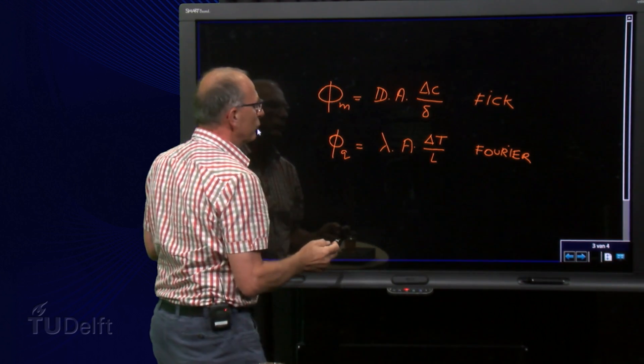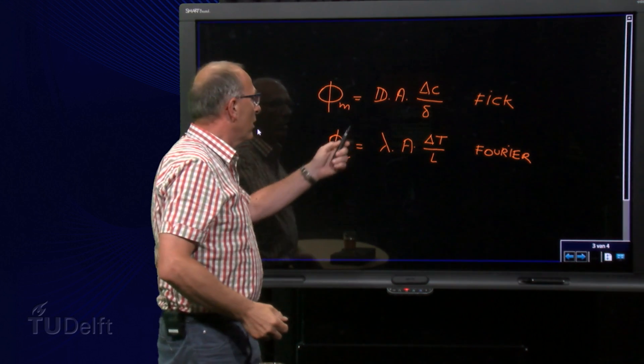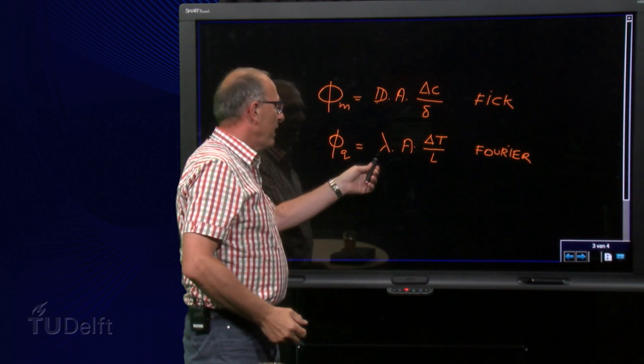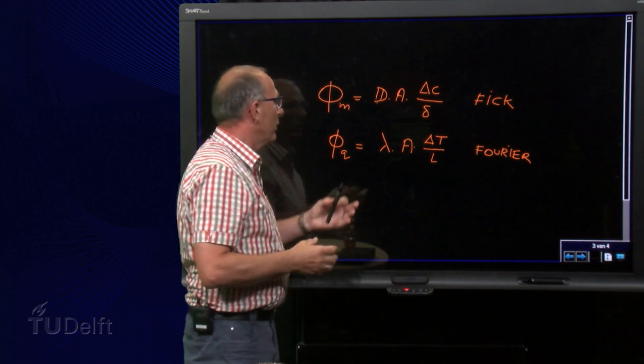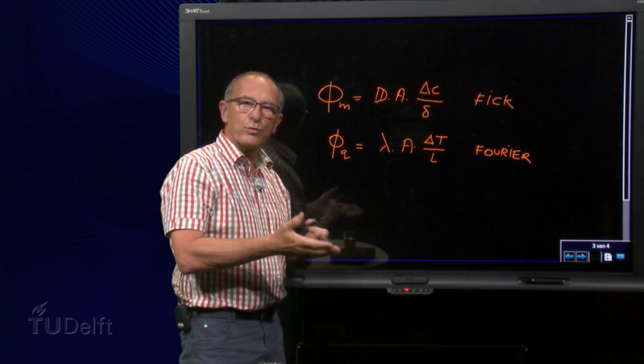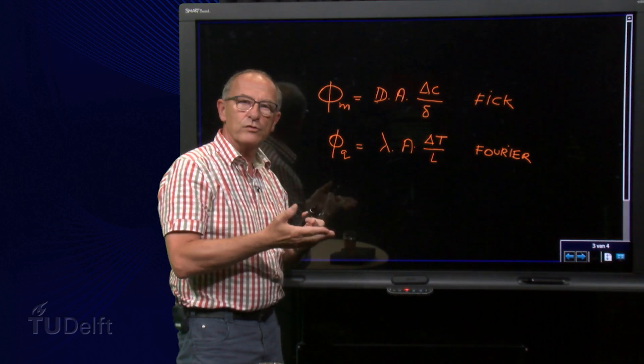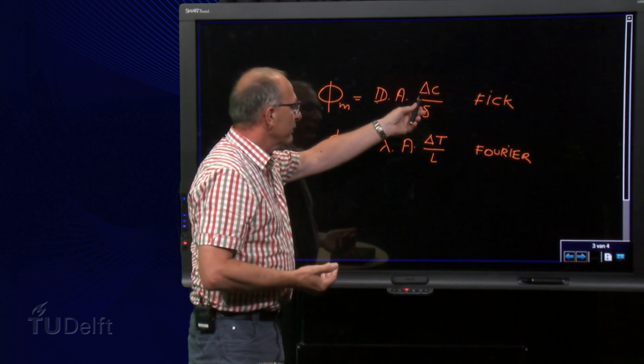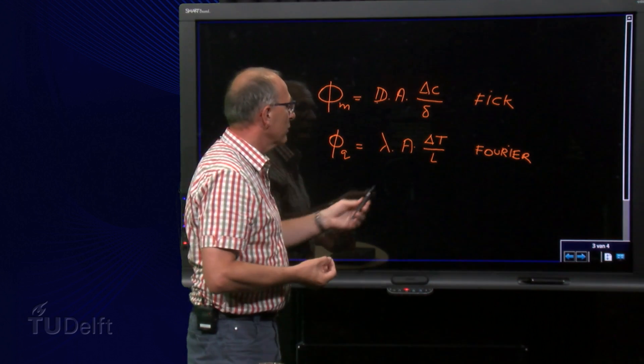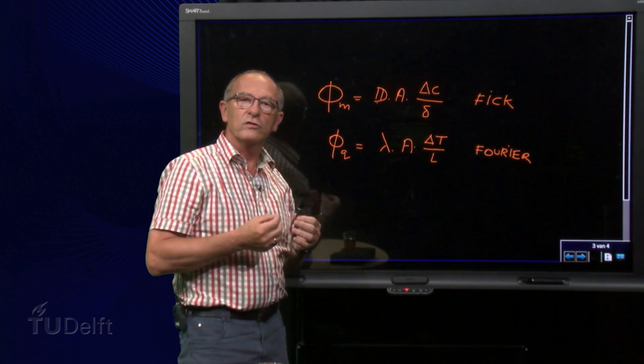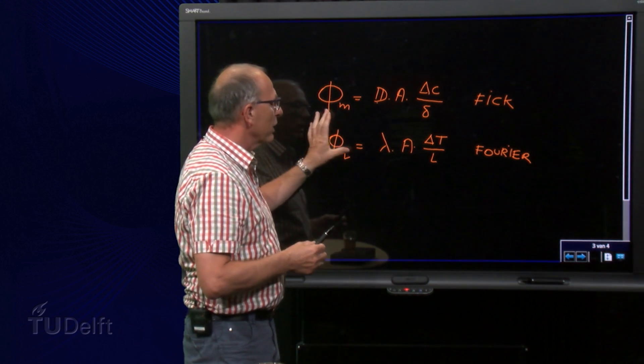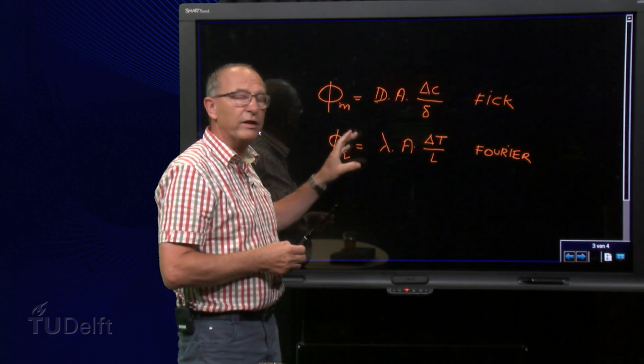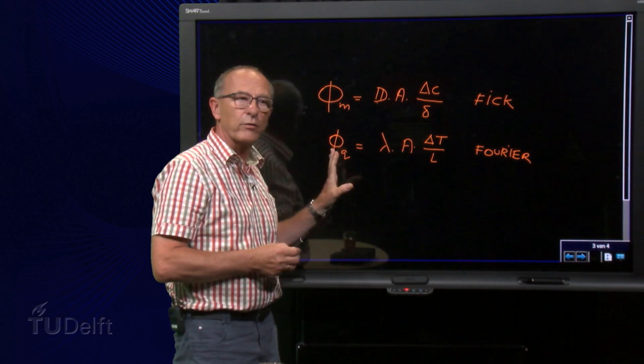In analogy, you can see between these two equations, the diffusion coefficient and the conductivity are properties of the material, the surface area depends on where the conduction or diffusion is going on, delta C is the driving force in the case of mass transfer, and delta T is the driving force in the case of heat transfer. So you see there is a large analogy between these two, and even mathematically they are quite similar.